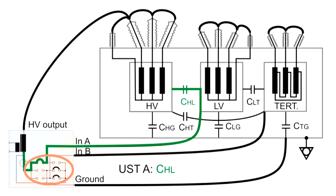We start with USTA. It delivers the capacitance between high voltage and low voltage winding CHL. Without rewiring, we switch to USTB to measure CHT.